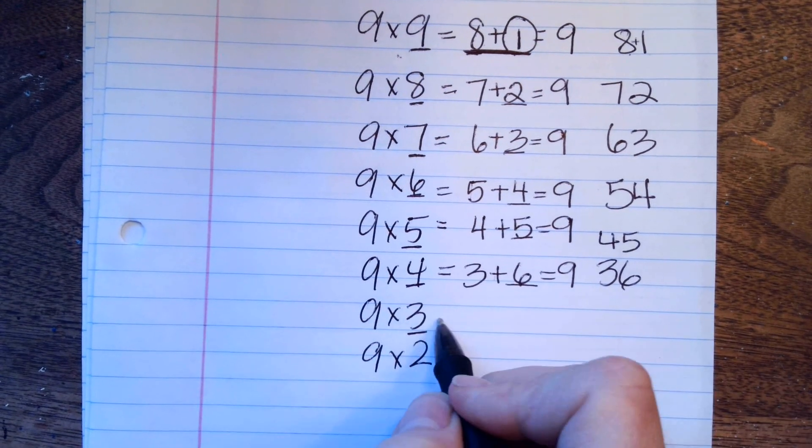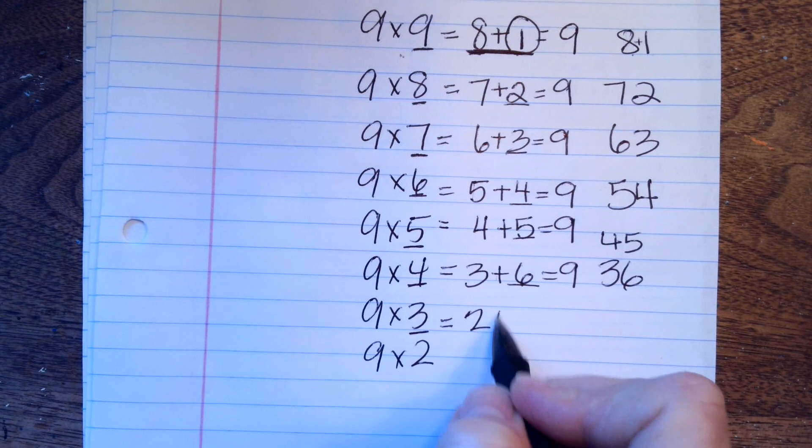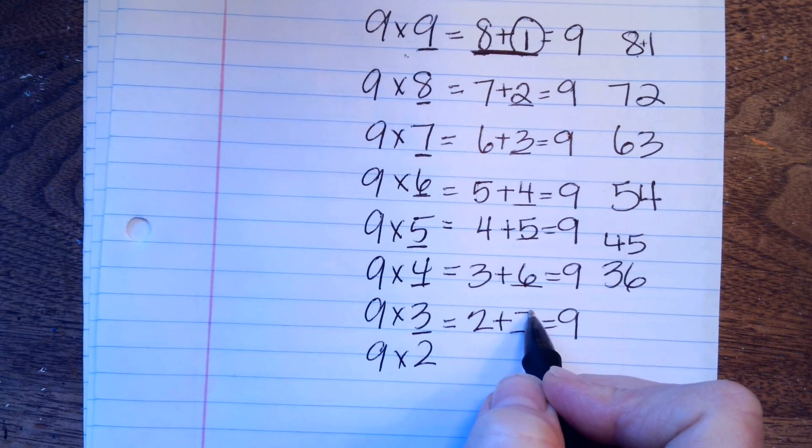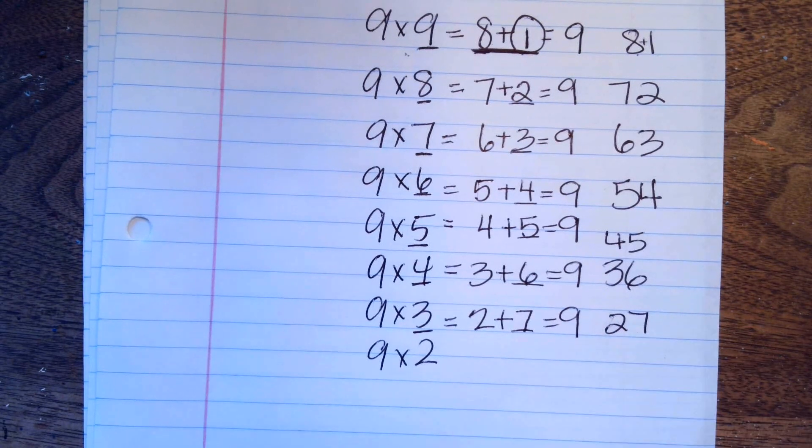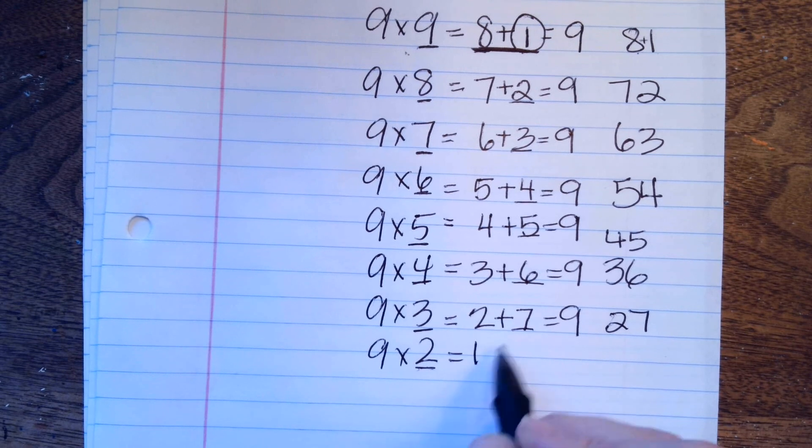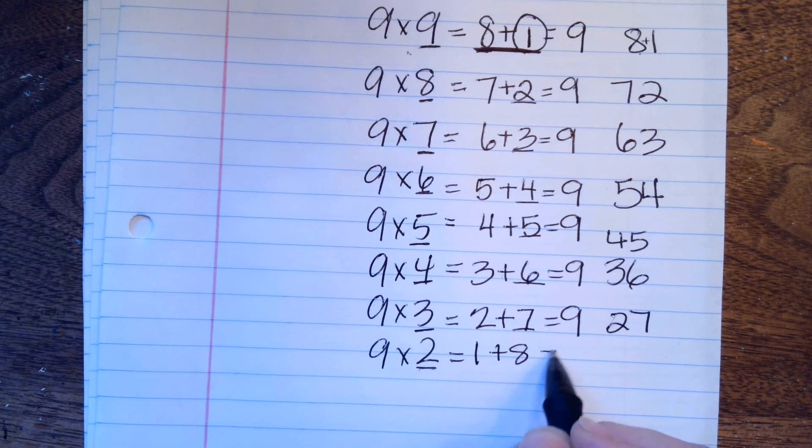Underline the 3. 3 minus 1 is 2. 2 plus something equals 9, 27. Next one, underline 2 minus 1 is 1 plus something equals 9, 18.